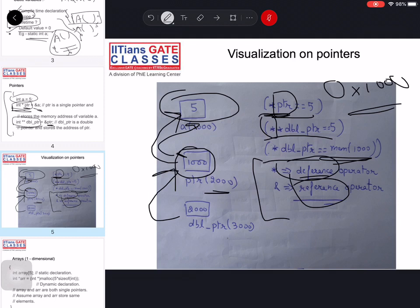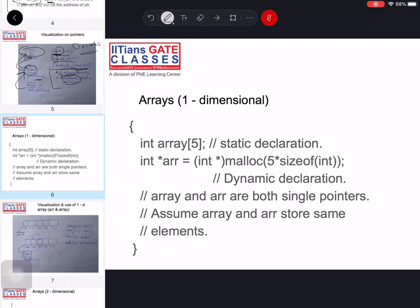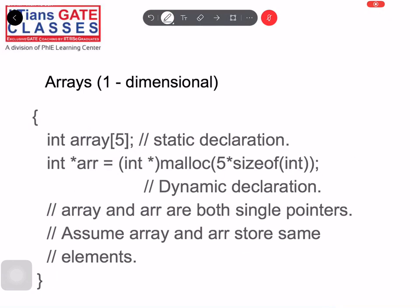There is usually no requirement to go beyond a double pointer in most GATE questions, though triple pointers exist for 3D arrays. Moving on to one-dimensional arrays: there are two kinds of declarations — static declaration, done at compile time, and dynamic declaration, done at runtime.